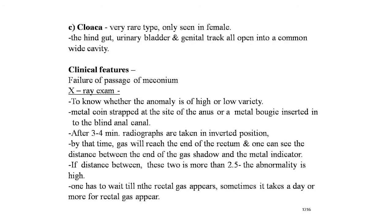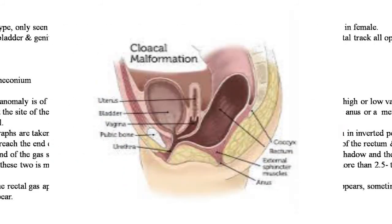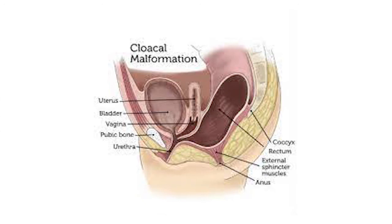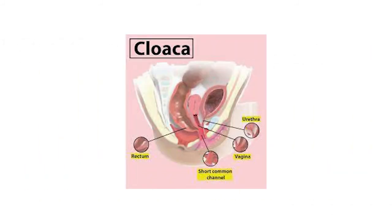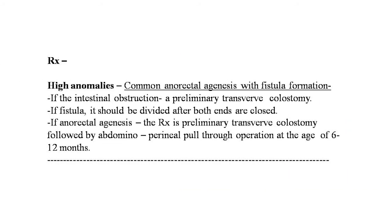If the distance between the gas shadow and the metal indicator is less than 2.5 cm, it is a low-level anomaly. One has to wait until rectal gas appears — sometimes this takes 24 hours or more, requiring repeated X-rays. On screen you can see the cloacal malformation: one common widely open cavity with the urinary bladder, vaginal opening, and rectal opening all as one. The next picture shows the cloaca with short communication channels between the rectum, vagina, and urethra.